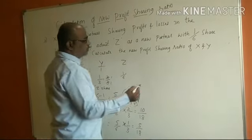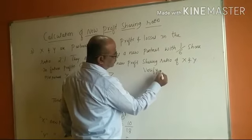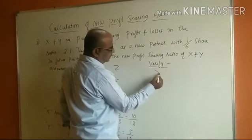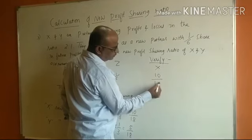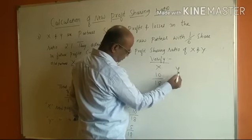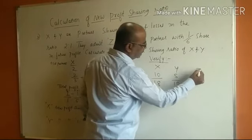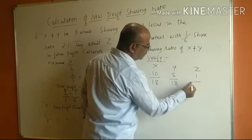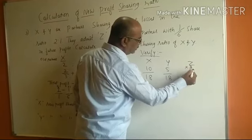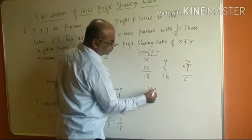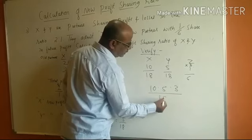To verify: X is 10 by 18, Y is 5 by 18, and Z is 1 by 6. To make the denominator 18, multiply Z by 3 to get 3 by 18. So the new profit sharing ratio is 10 is to 5 is to 3, divided by 18.